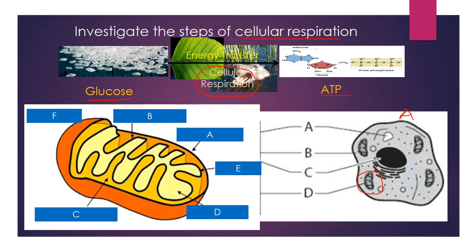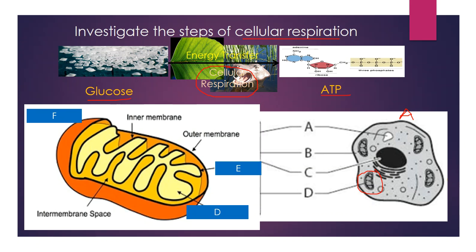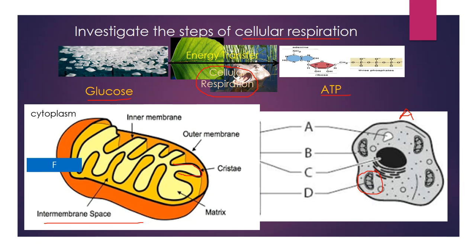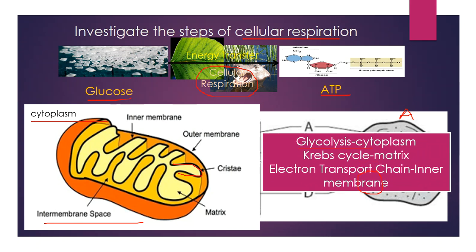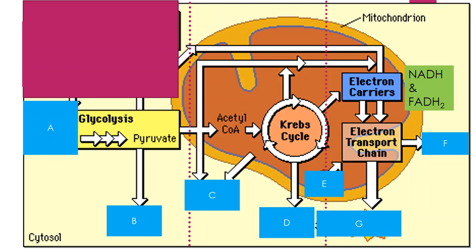Let's look at the mitochondria structures. We have the outer membrane, the inner membrane, the inner membrane space between the two membranes, and the matrix — that space right in the middle. Each fold of the inner membrane is called a crista. Outside the mitochondria, all organelles float in the cytoplasm, which also plays a big role. There are three parts to cellular respiration: glycolysis in the cytoplasm, the Krebs cycle in the matrix, and the electron transport chain along the inner membrane — which is why there are so many cristae, providing more membrane surface area.